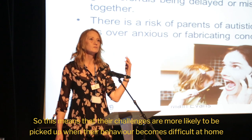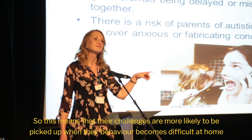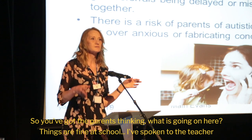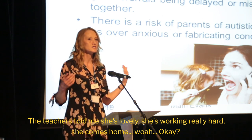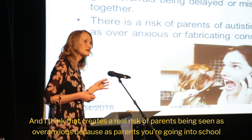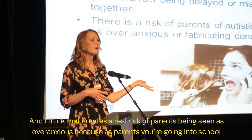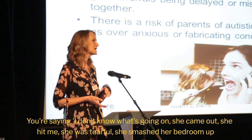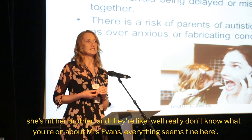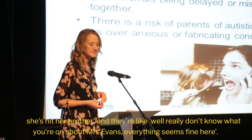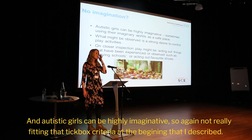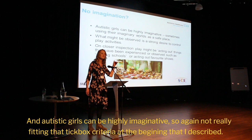Their challenges are more likely to be picked up when behaviour becomes difficult at home. Parents think: what is going on? Things are fine at school. The teacher says she's lovely, she's working really hard — then she comes home and there's a complete breakdown. That creates a real risk of parents being seen as overanxious, going into school saying she hit me, she was tearful, she smashed her bedroom up — and the school says everything seems fine here. Autistic girls can also be highly imaginative, so again not fitting the tick-box criteria.